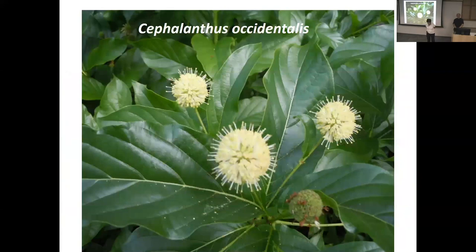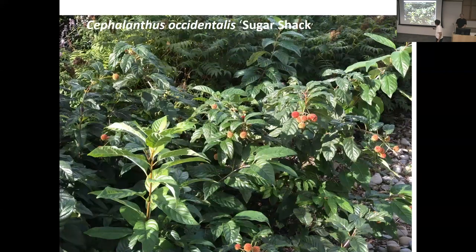Cephalanthus buttonbush can be quite big and is beautiful, but a bit large for our five-foot-wide, 18-inch soil space. We prefer to use 'Sugar Shack', which has red fruit and is much more compact and dwarf. It's important to select plants not just based on species but on cultivar and the planting envelope — the envelope of soil you have to support these plants.